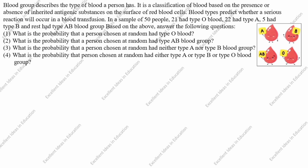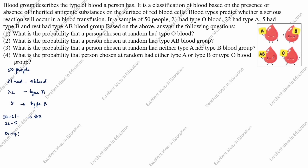In a sample of 50 people, 21 had type O blood, 22 had type A, 5 had type B, and the rest had type AB. So what we will do here: 50 minus 21 minus 22 minus 5. So 50 minus 48 equals 2, so AB is equal to 2.